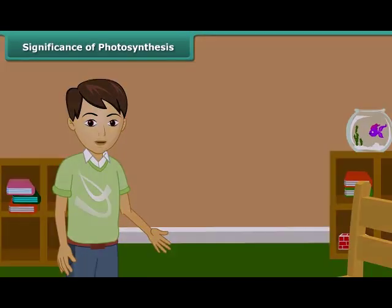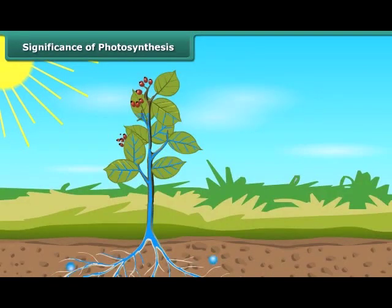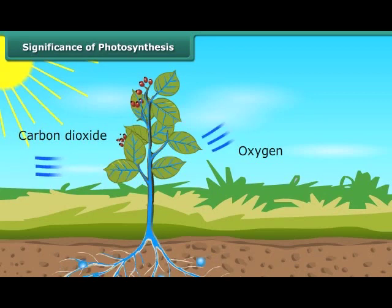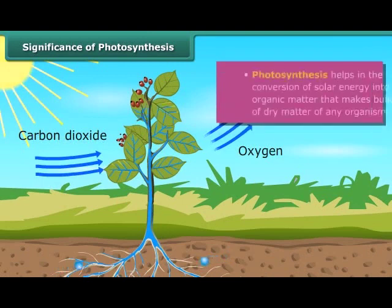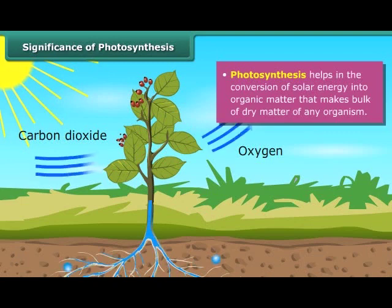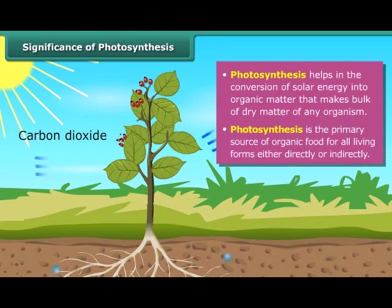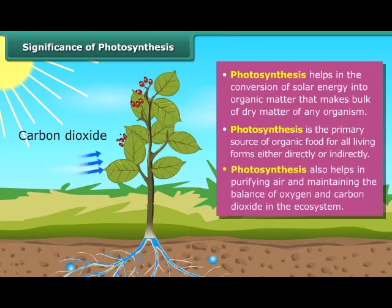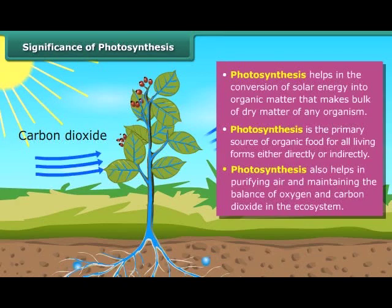Photosynthesis is an important and vital process for life on this planet. This process helps in the conversion of solar energy into organic matter. Hence, photosynthesis links the physical and biological world. It is the primary source of organic food for all living forms, either directly or indirectly. It also helps in purifying air and maintaining the balance of oxygen and carbon dioxide in the ecosystem.